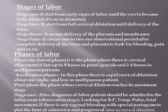The first stage has phases. The latent phase is where there is cervical effacement. It lasts up to eight hours in primigravidas and two to four hours in multiparas. Note: you cannot say multigravida — it is possible to be multigravida but with all previous pregnancies ending in abortion. The latent phase involves the disappearance of the cervical canal to become part of the lower segment of the uterus.